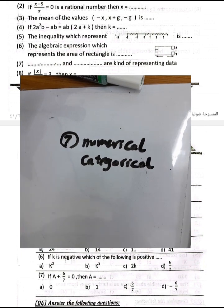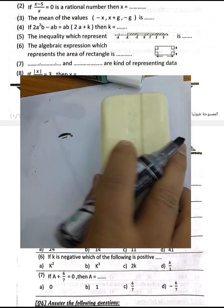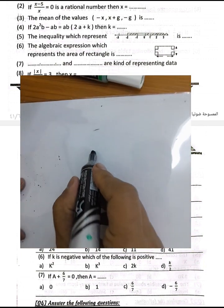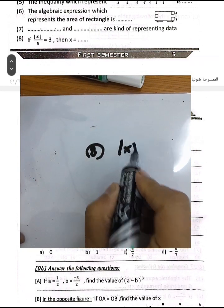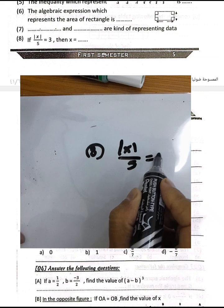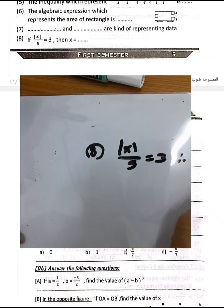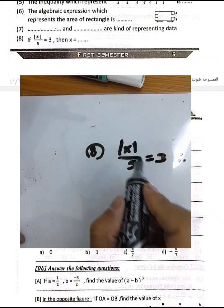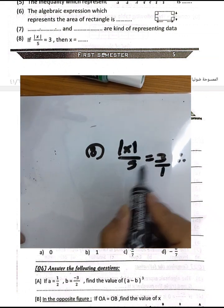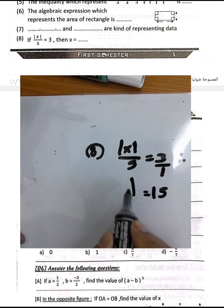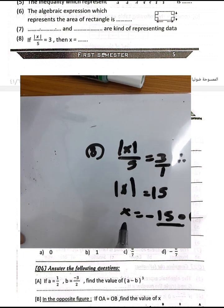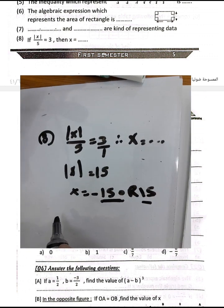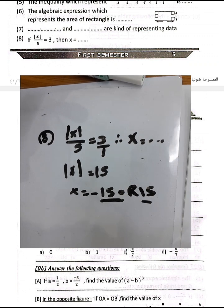Question 8: If the absolute value of x over 5 equals 3, find x. Using the property that the product of extremes equals the product of means: 5 times 3 equals 15, so the absolute value of x equals 15. Therefore x equals 15 or negative 15 — two solutions.